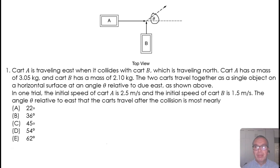As shown above, in one trial, the initial speed of cart A is 2.5 meters per second and the initial speed of cart B is 1.5 meters per second. The angle theta relative to east that the carts travel after the collision is most nearly.